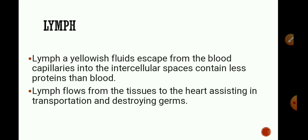Next is lymph — a yellowish fluid that escapes from blood capillaries into the intercellular space, which is the space between two cells. It contains less proteins than blood. Lymph is another circulatory fluid in our body, also called tissue fluid or extracellular fluid. Through the pores in the walls of capillaries, some plasma, proteins and blood cells — except red blood cells — escape into intercellular space in the tissues to form tissue fluid or lymph. It is similar to plasma but light yellow in color and contains fewer proteins.